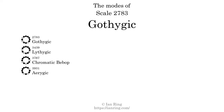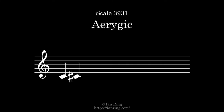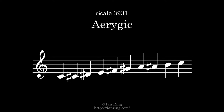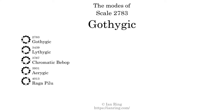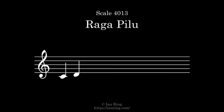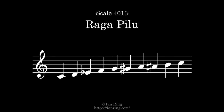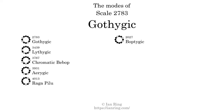The fourth mode is scale 3931, also known as Erigic. It sounds like this. The fifth mode is scale 4013, also known as Erigic. It sounds like this. The sixth mode is scale 2027, also known as Erigic. It sounds like this.